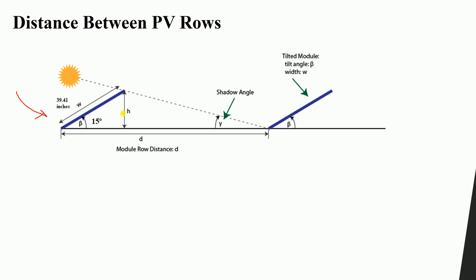However, I would like to get it more accurately — the correct answer for each location and each situation. In this example, we have the tilt angle equal to 15 degrees, and the width of the panel itself is 39.41 inches.